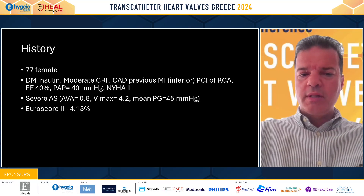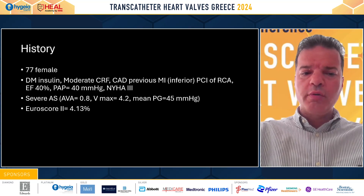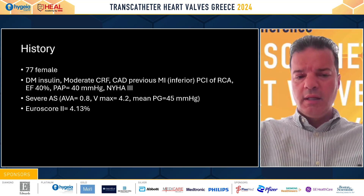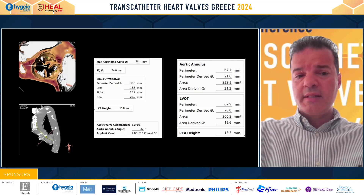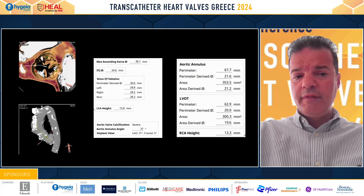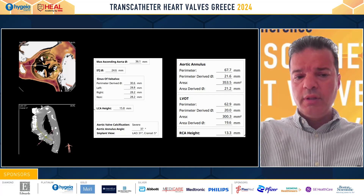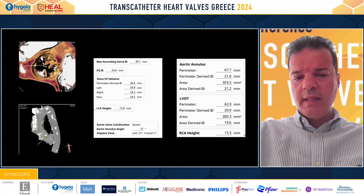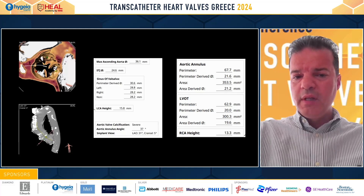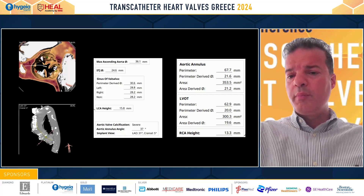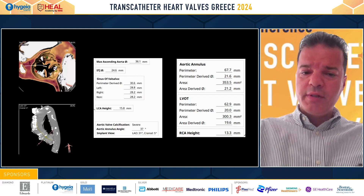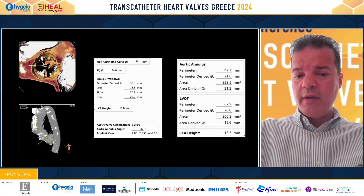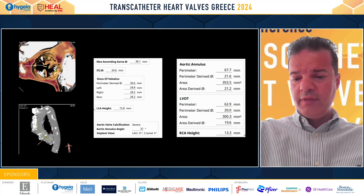There was significant aortic stenosis — you can see the numbers here — and the EuroSCORE of this patient was calculated at 4.13%. These are some features of the CT scan: you can see a tri-leaflet aortic valve with a moderate degree of calcification, speckles of calcium in the ascending and descending aorta. The anatomy is small — the perimeter-derived annulus is 21.6mm, the area-derived diameter 21.2mm, the LVOT is 20mm, and the height of both coronary ostia is acceptable at 15mm and 13mm.